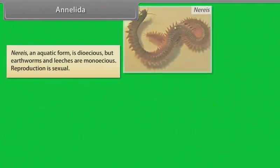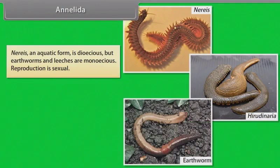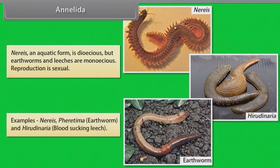Aquatic forms are dioecious, but earthworms and leeches are monoecious. Reproduction is sexual. Examples: Pheretima, that is earthworm, and Hirudinaria, that is blood-sucking leech.